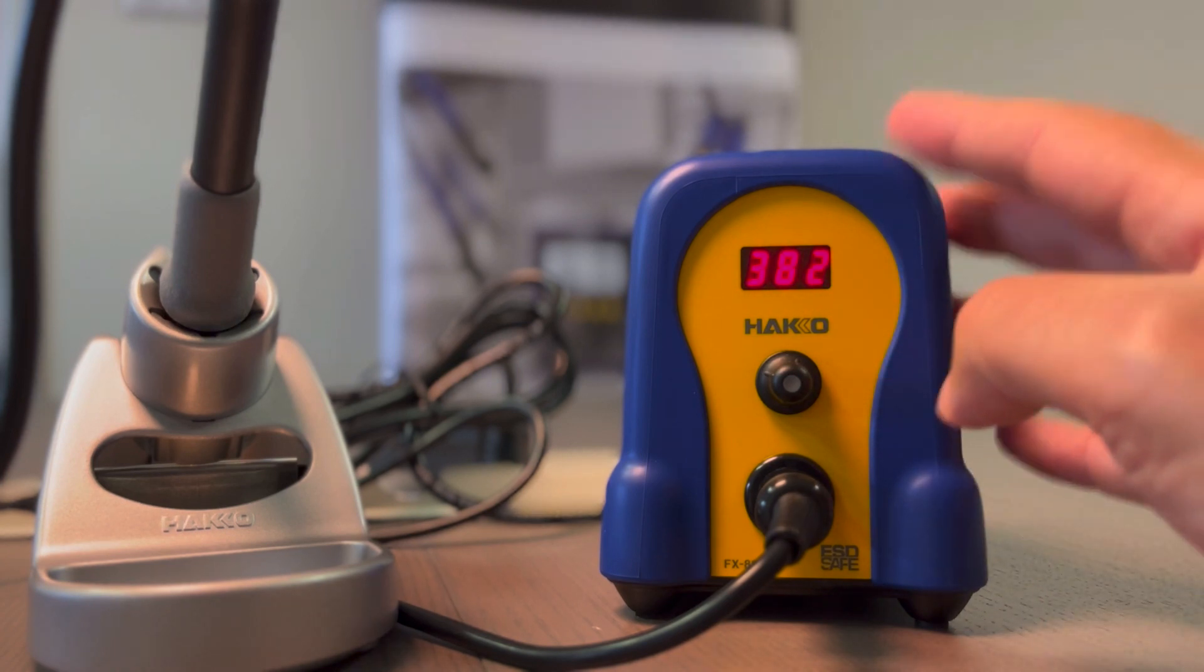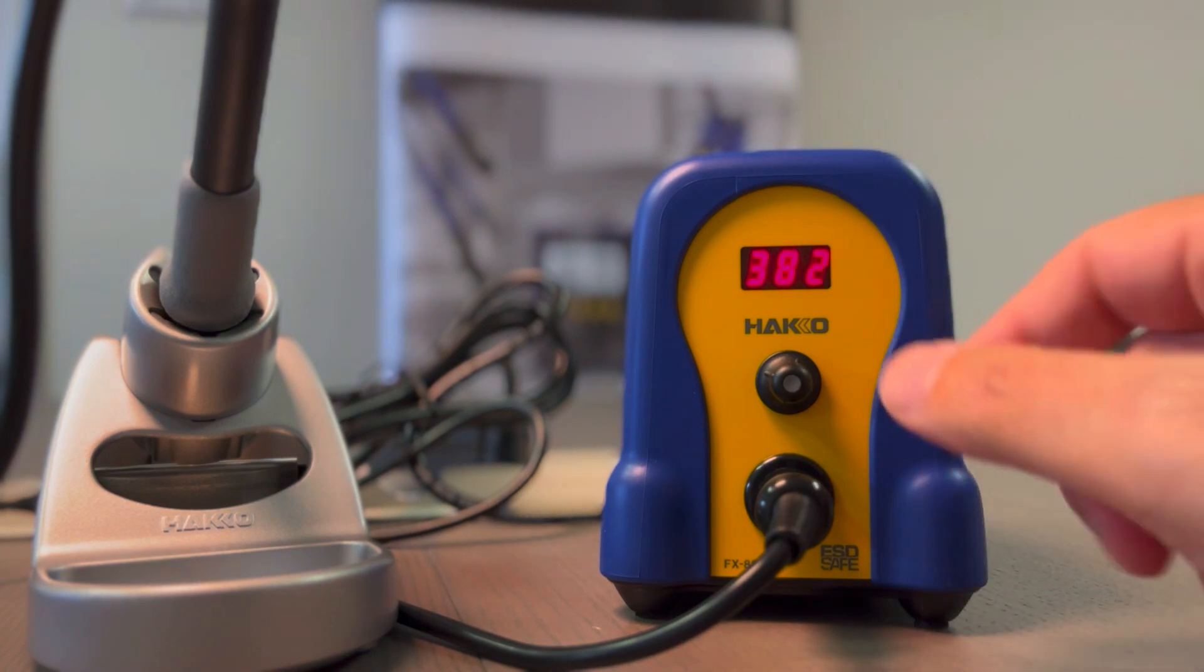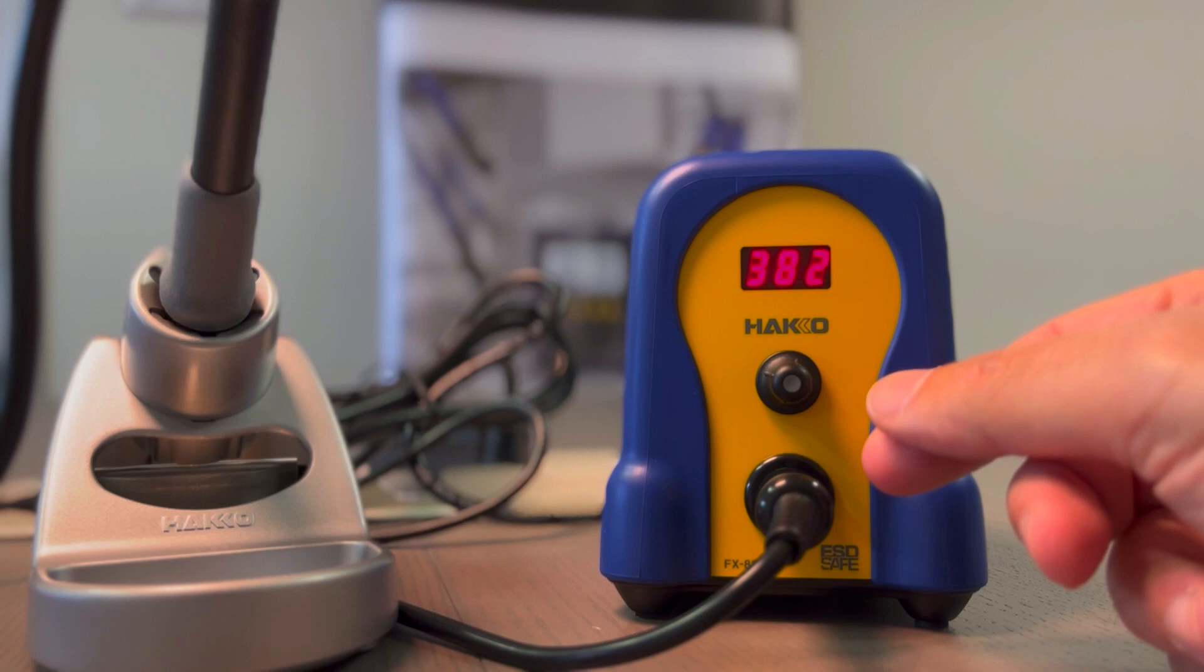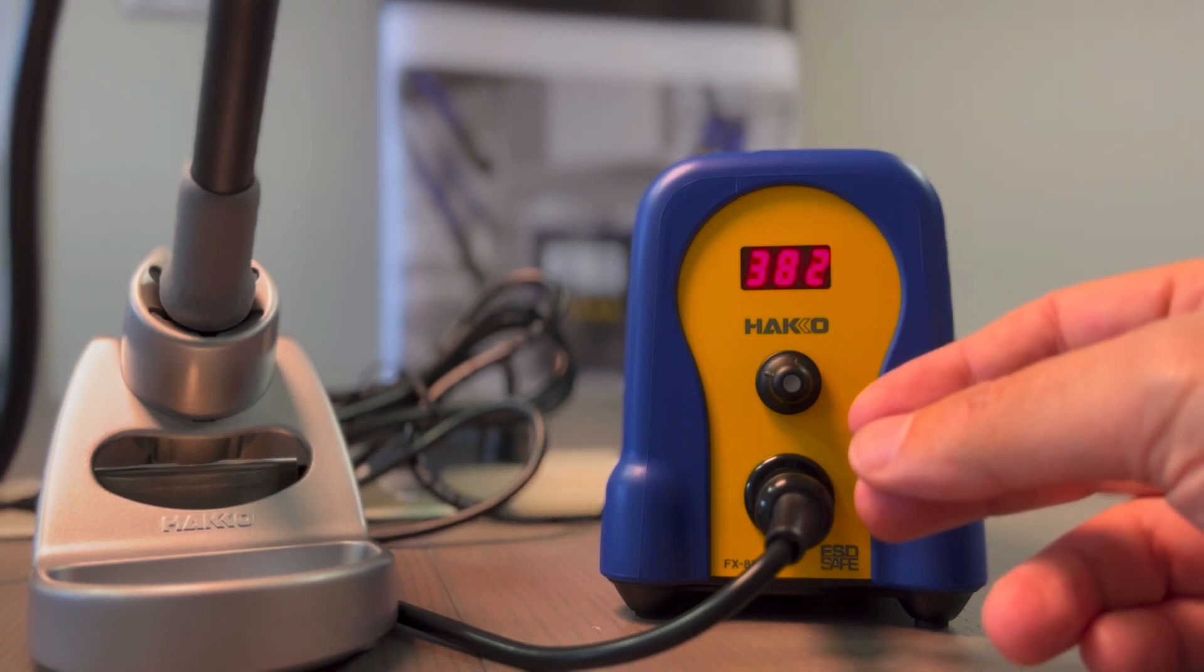The soldering station has two main modalities: the standard one, which is the one we just saw where with the knob you adjust the temperature, and the one with pre-selected temperature.